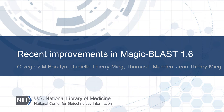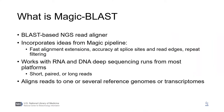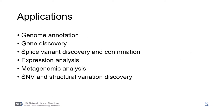My name is Greg Boratyn and I will present recent improvements in MAGIC BLAST 1.6. MAGIC BLAST is a next generation read aligner. It incorporates ideas from the MAGIC pipeline and implements them within the BLAST code base. Read mapping is the first step of many kinds of genomics analysis, and MAGIC BLAST has a wide range of applications.